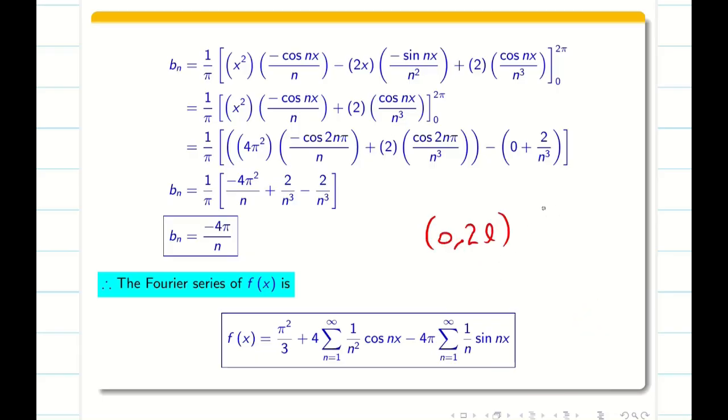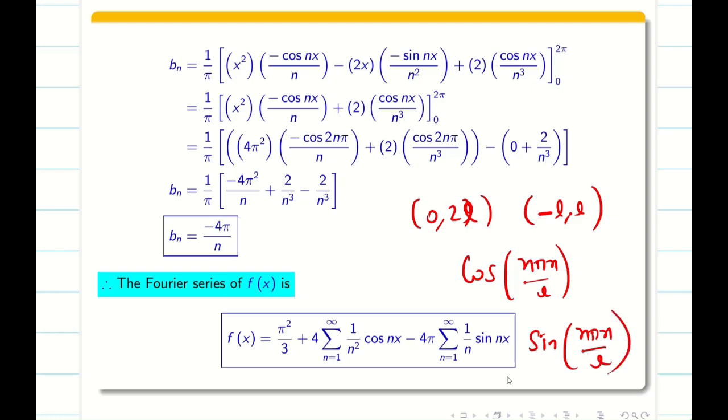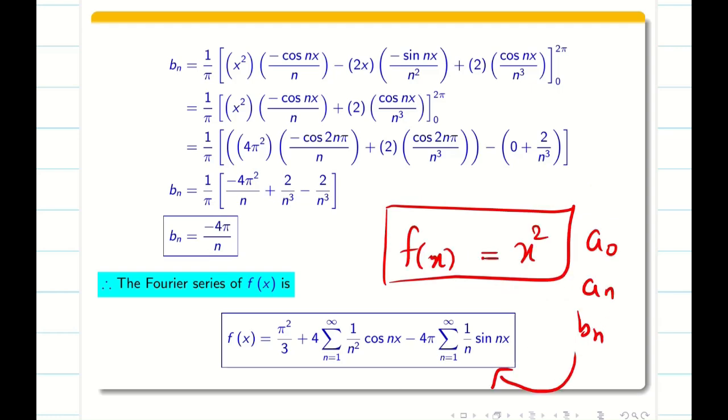In the next video we are going to see problems under 0, 2l. So the only difference is in 0, 2π or minus π comma π, my terms are simply cos nx, sin nx, etc. Under the limit 0, 2l or minus l comma l, we will be writing like cos nπx by l and sin nπx by l in the Fourier series formula. Thank you for watching the video. See you in the next video. Subscribe our channel, share to your friends. If you have any queries post in the comment box, we will try to help you. Thank you.